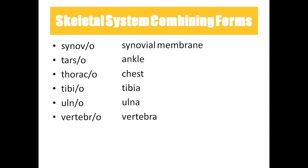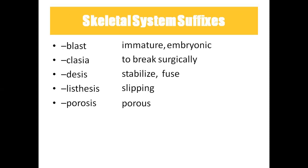'Tibio' means tibia, 'ulno' means ulna, 'vertebro' means vertebra. Coming to suffixes: 'blast' means immature or embryonic cells; 'clasia' means to break surgically; 'desis' means to stabilize and fuse; 'lystesis' means slipping forward; 'porosis' means porous. For example, osteoporosis means having pores in the bones, leading to easy breakage. It is caused by calcium deficiency and vitamin D deficiency.